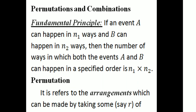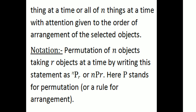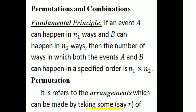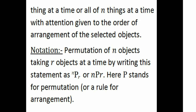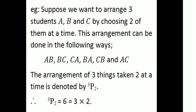Then, permutation. Permutation refers to the arrangement which can be made by taking R of things at a time, or all N things at a time, with attention given to the order of arrangement of the selected objects. This is written as NPR, and that is the rule of permutation.